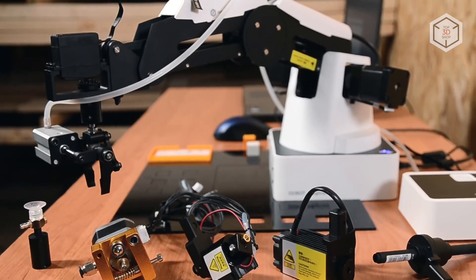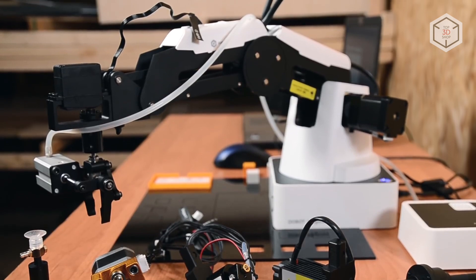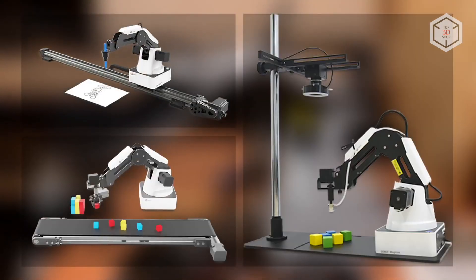The range of available add-ons is constantly expanded by the manufacturer. You can pre-order a linear rail kit, mini conveyor belt, and a computer vision module.